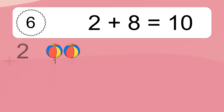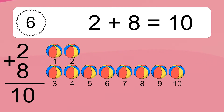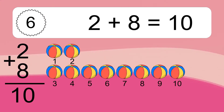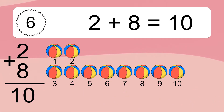2 plus 8 equals what? 2 plus 8 equals 10. Let's count it: 1, 2, 3, 4, 5, 6, 7, 8, 9, 10.